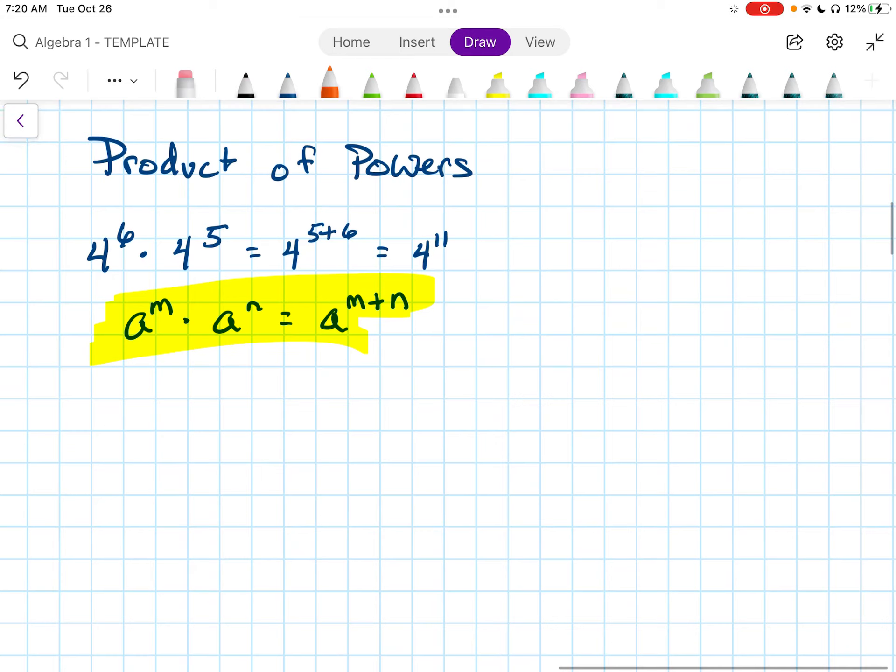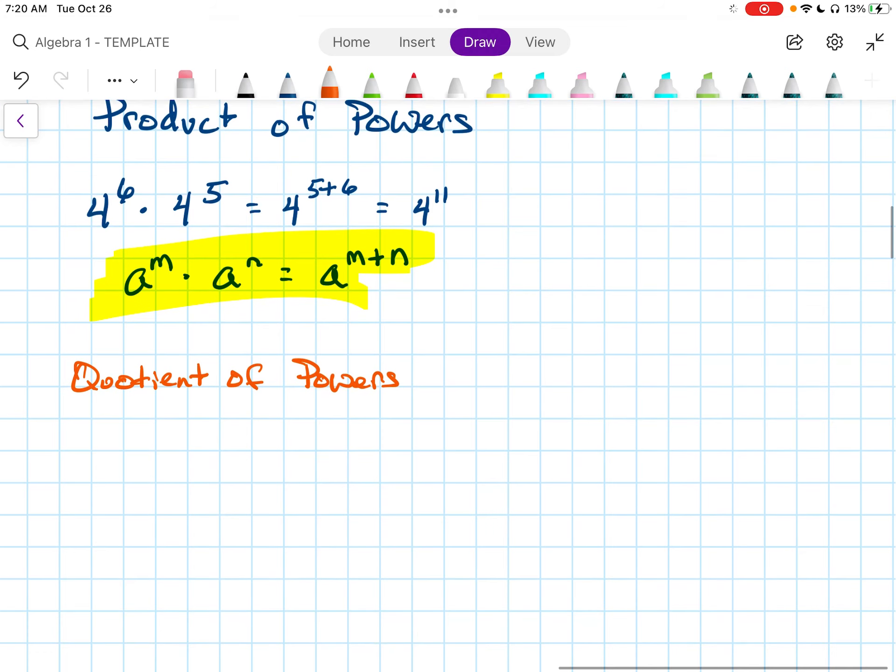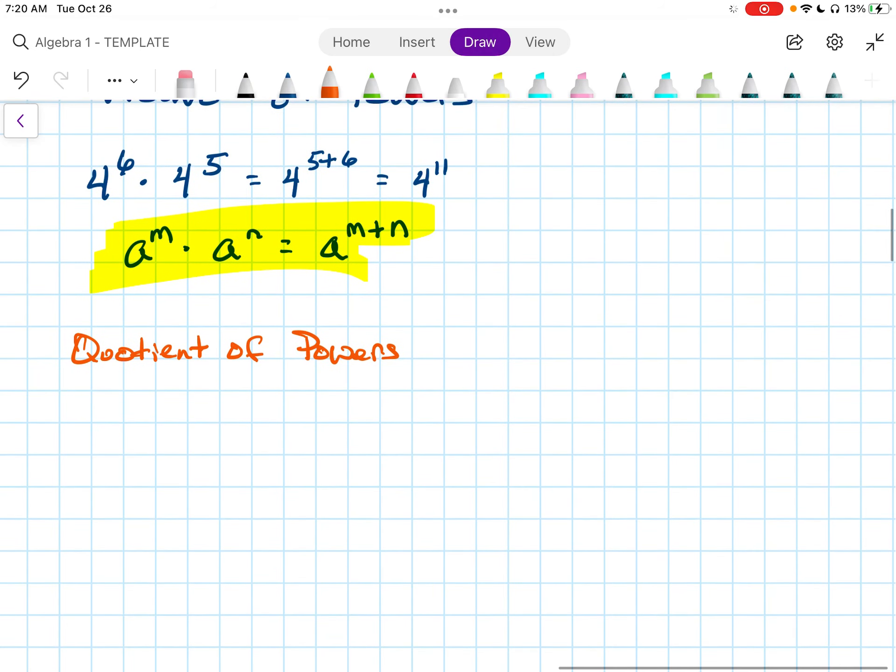Next up, we have quotient of powers. This one talks about division, whereas the other one was multiplication. If we have something like 4 to the 6th over 4 to the 2nd, that would be 4 to the 6th minus 2, which is 4 to the 4th.